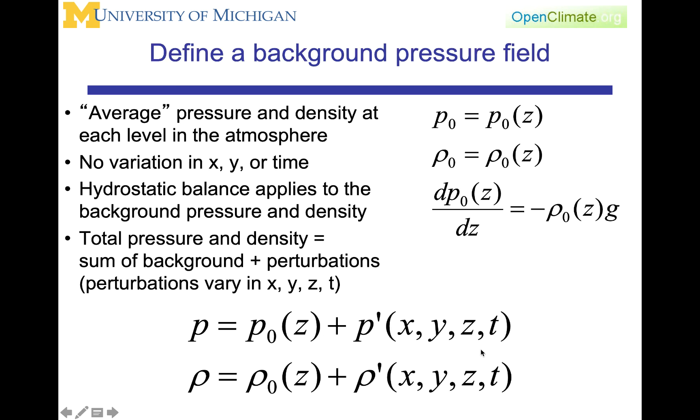In order to do the scale analysis, we are going to divide the pressure into an average plus a deviation from that average, and that average is going to be assumed to be a function of height only, taking advantage of the fact that there's a very strong function of pressure with height z. Likewise, there's a similar function of density ρ. Therefore, we're going to take ρ₀ equal to ρ₀ of z.